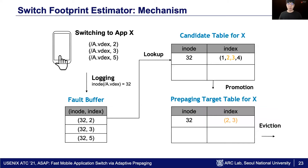The figure shows how SFE generates the pre-paging target table from page fetching information. Page fetching information is logged into a buffer called the fault buffer. When the switch is done, SFE examines entries in the fault buffer to check if there exists a match in the candidate table. If a match is found, it is promoted to the pre-paging target table.